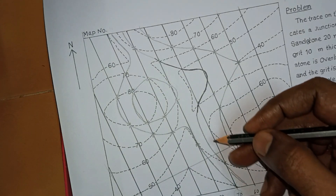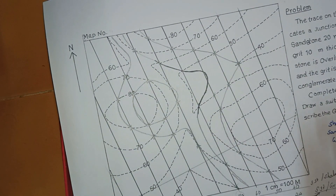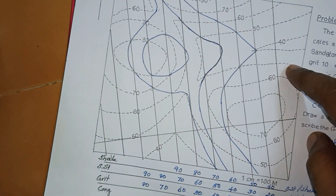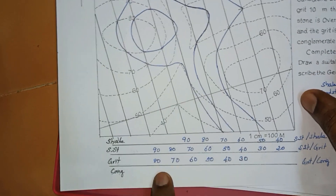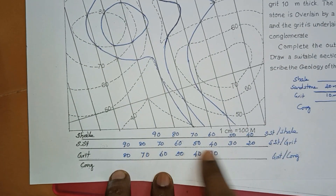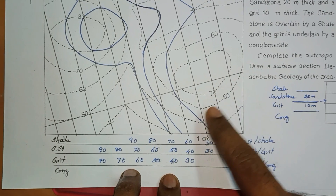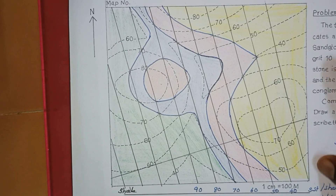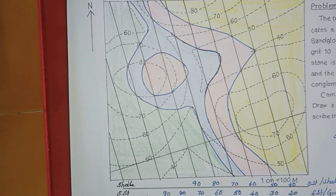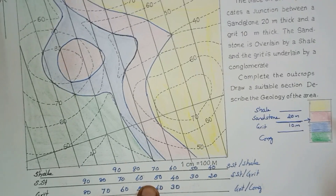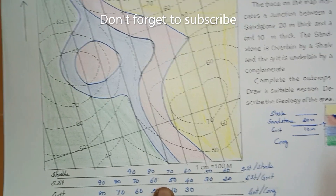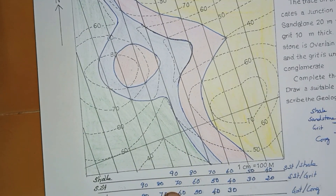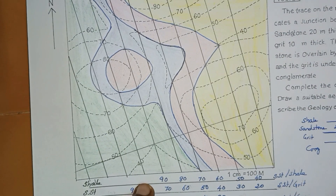Now mark all boundaries neatly and erase the unwanted lines. The boundaries have been drawn in blue ink with all details indicated. Color the map: yellow for shale, red for sandstone, blue for grit, and green for conglomerate. The entire map is now traced.